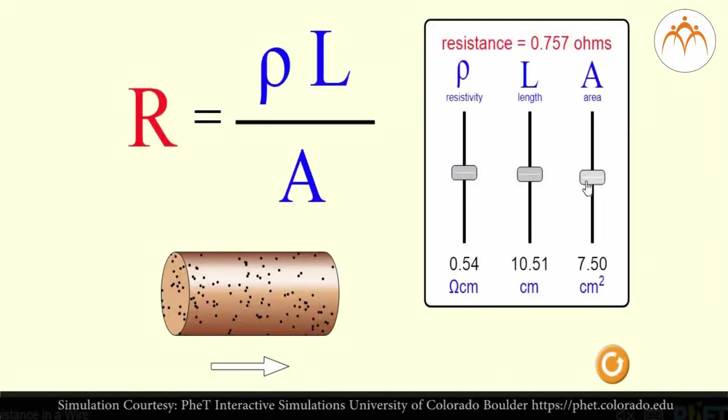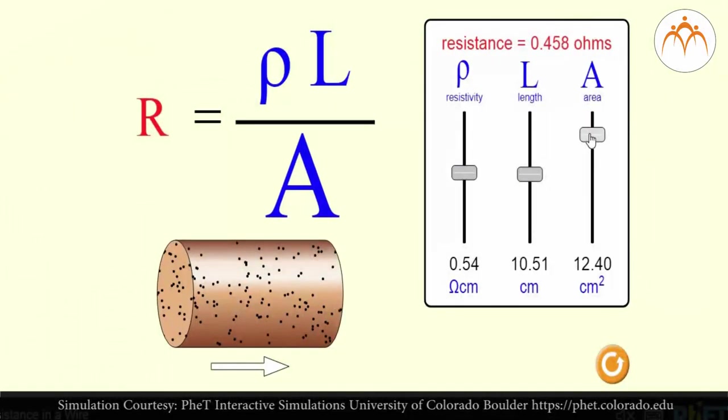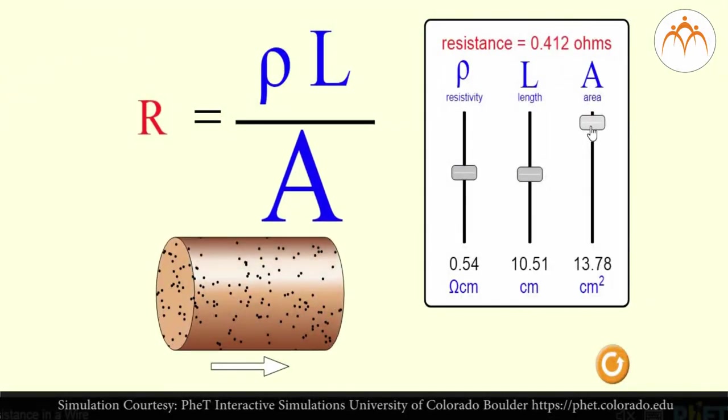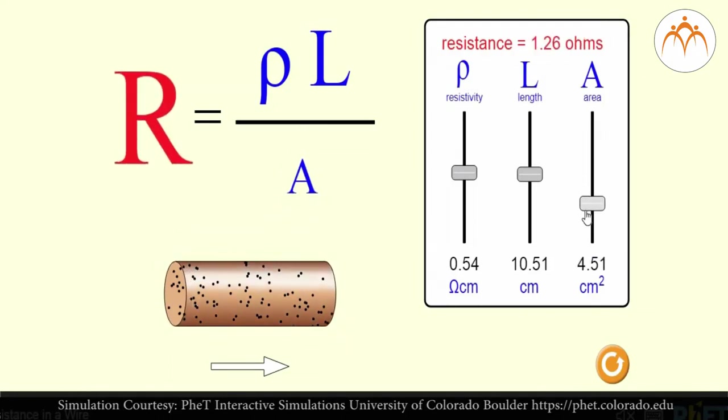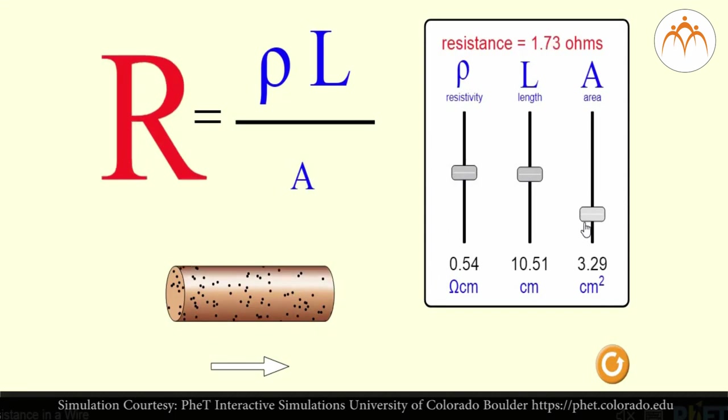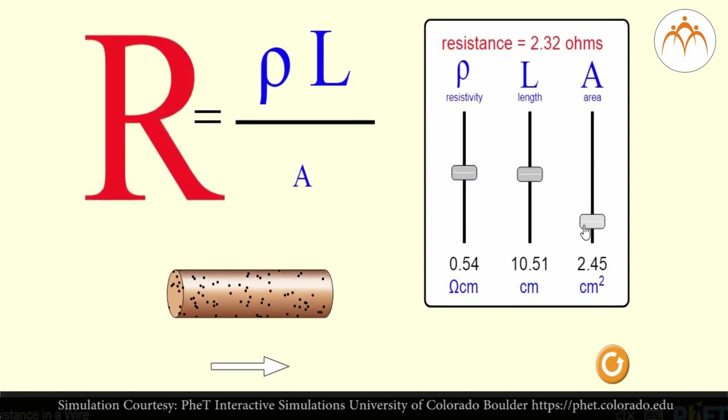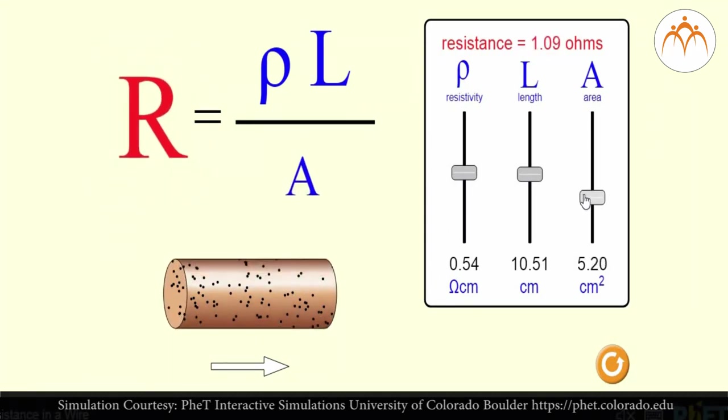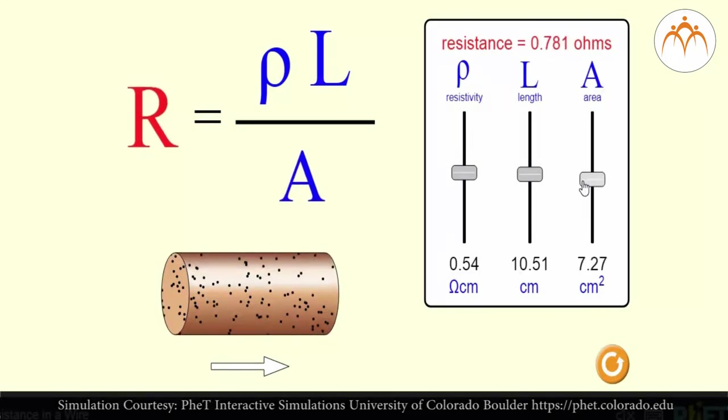The second variable is the cross-sectional area of the wire, which also affects the amount of resistance. Thick wire has greater cross-sectional area than thin wire and hence less resistance. When all other variables are the same, charge will flow at a higher rate through thicker wires with greater cross-sectional area than through thinner wires.